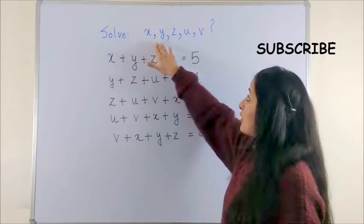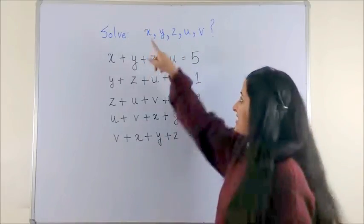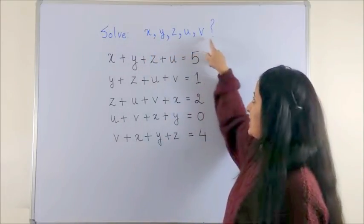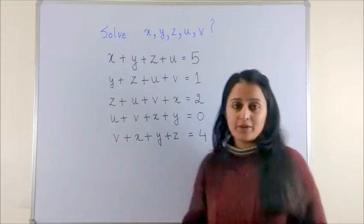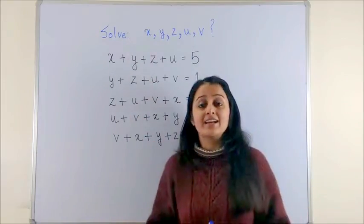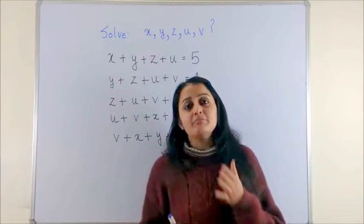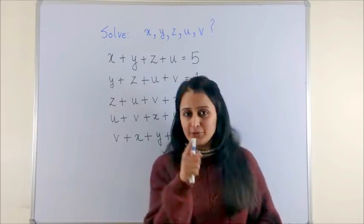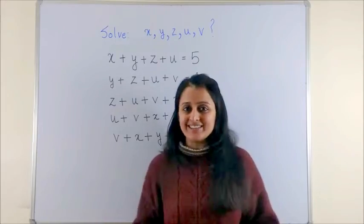So it says you have to solve for these 5 variables, that is x, y, z, u and v, given these 5 equations under 5 seconds. Yes, this is possible much faster than that if you know the trick. So, let's get started.